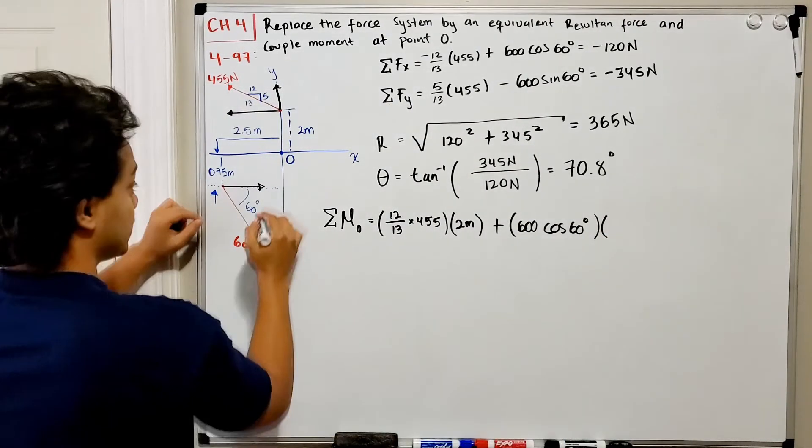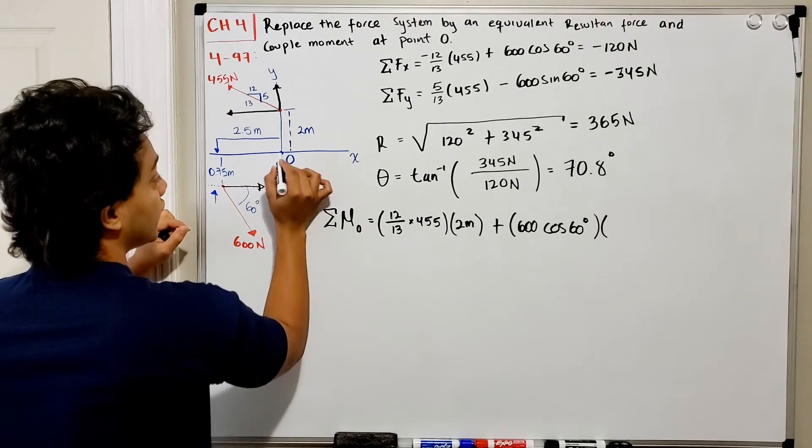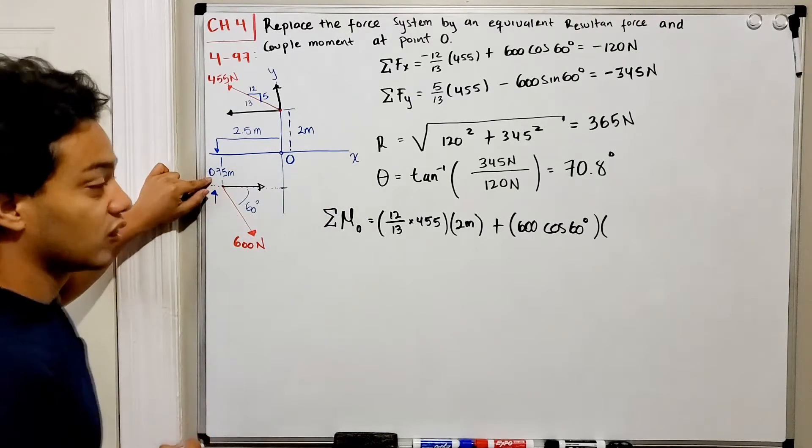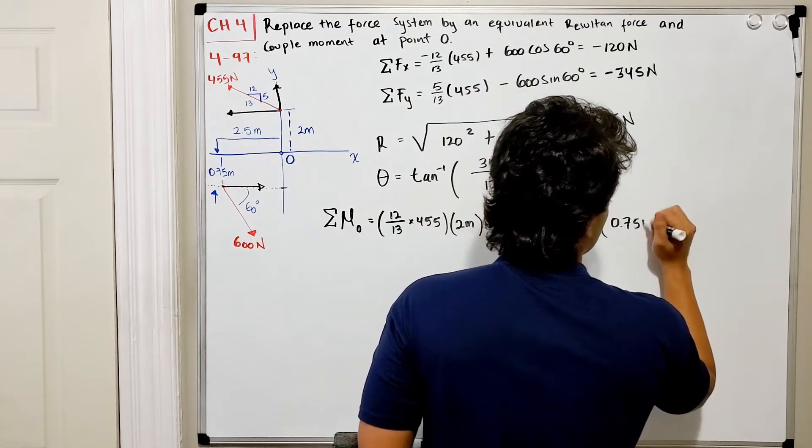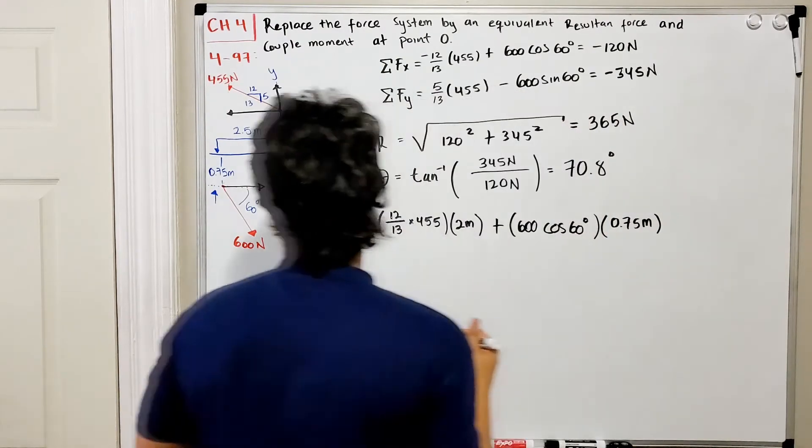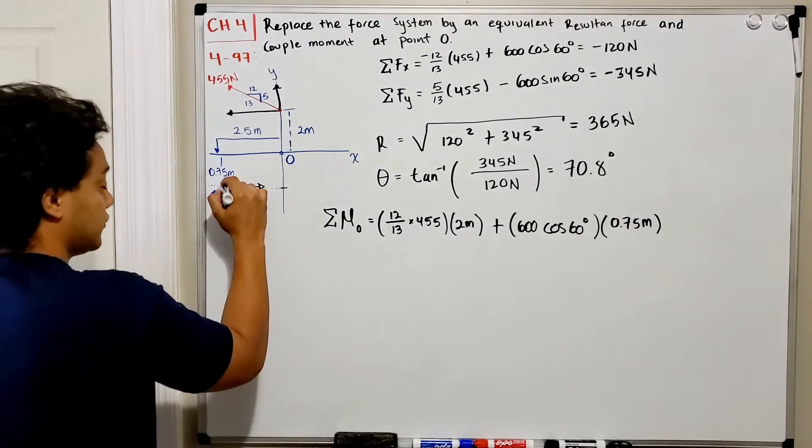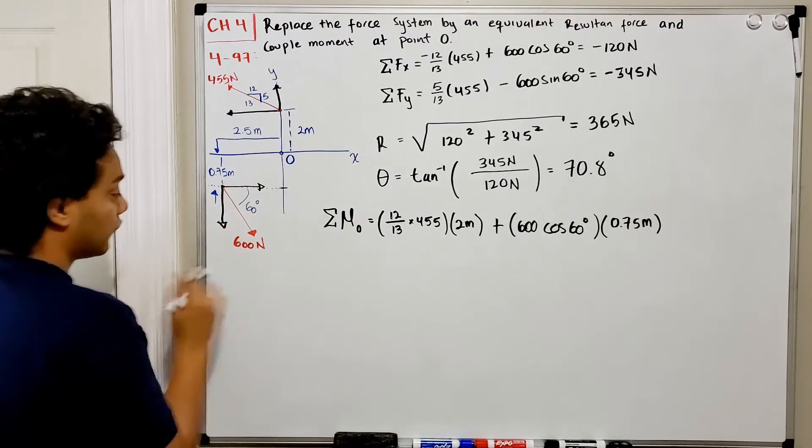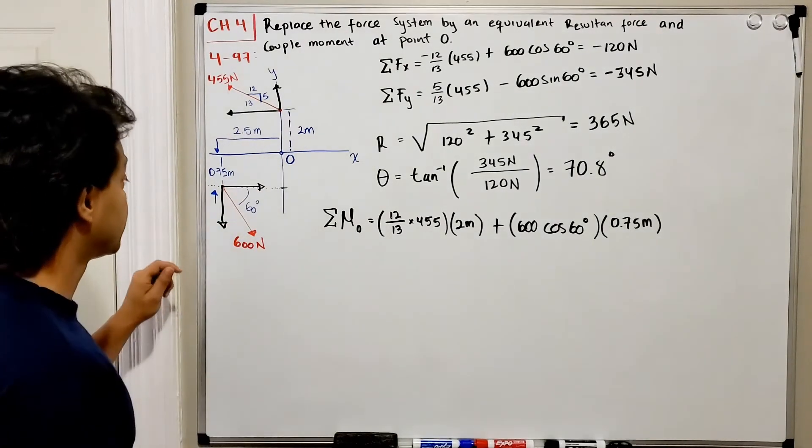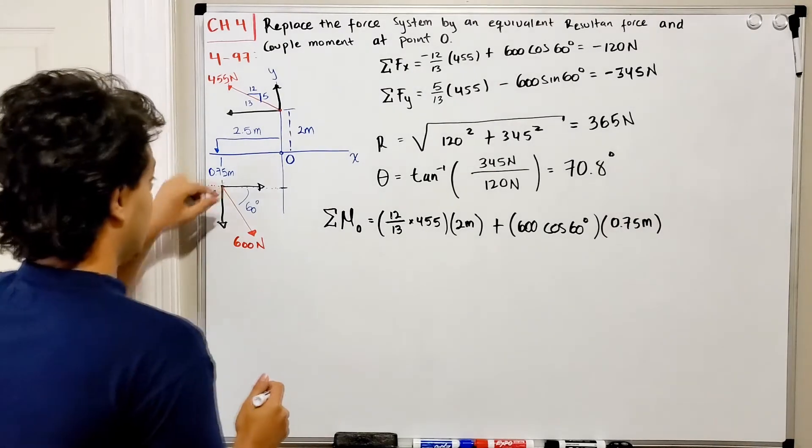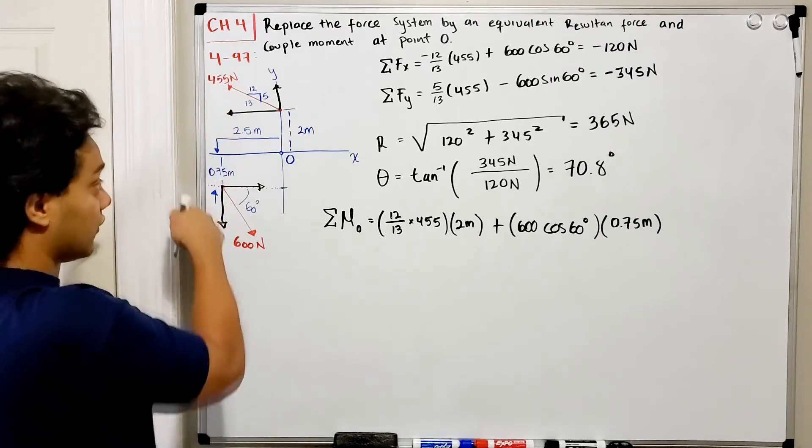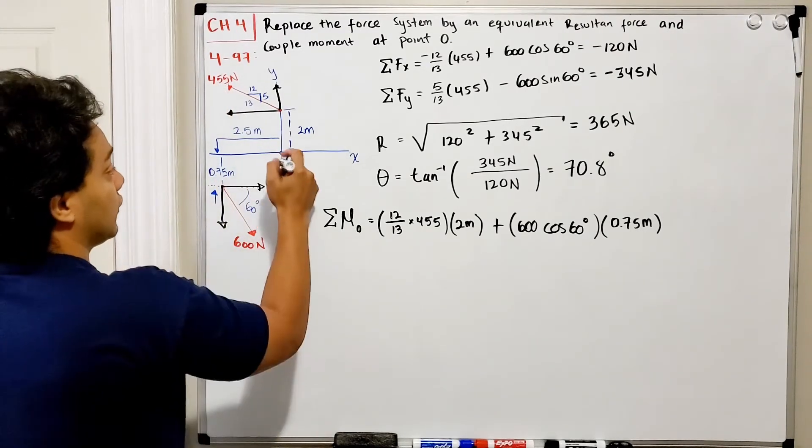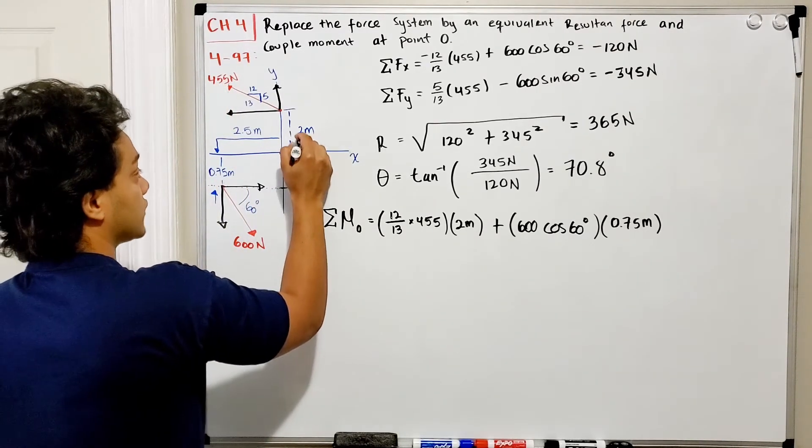Multiplied by the distance, which is 0.75 meters. Now I'm left with the y component of the 600 newtons. If we hold here and pull the system down like this, it also goes counterclockwise.